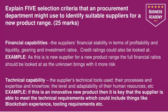For the example, we have to relate back to the context. We've got five selection criteria, but the question is talking about identifying suitable suppliers for a new product range, so every point that you make has to address that context. As this is a new supplier for a new product range, the full financial ratios should be looked at, as it's unknown and brings with it more risk. We need to make sure the supplier doesn't go bust on us.